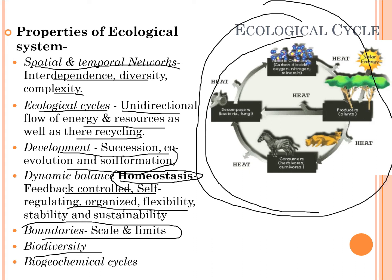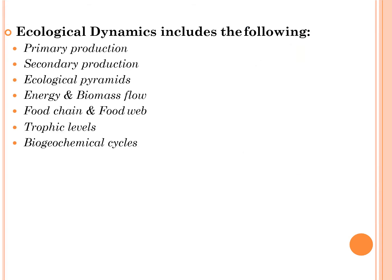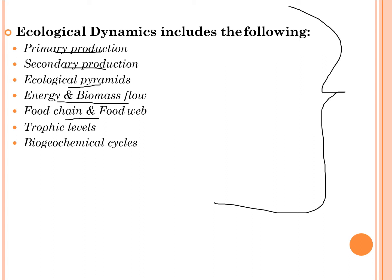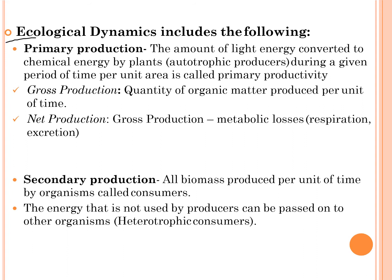These are some important ecological dynamics, which include primary production, secondary production, ecological pyramids, energy and biomass flow, food chains, food webs, trophic levels, and biogeochemical cycles. Let's talk about primary production.